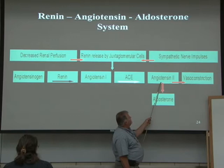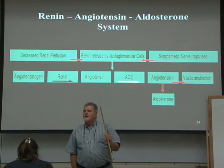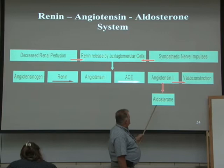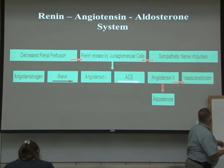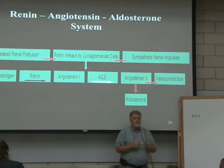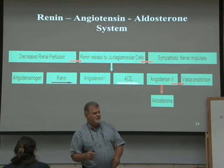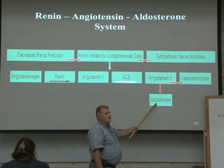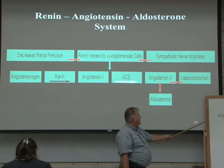The other thing angiotensin 2 does is cause aldosterone to be released from the adrenal gland, specifically the adrenal cortex. And ADH — which is anti-diuretic hormone, make sure you write ADH in — causes you to urinate less. ADH is produced by the pituitary gland. This compound promotes the release of both aldosterone and ADH. ADH is released by the posterior pituitary, and aldosterone is released by the adrenal cortex.